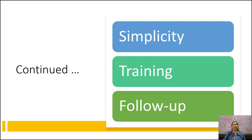Fifth is training. Supervisors and union representatives should be given training in grievance handling. This will help to ensure effective working of the grievance procedure. Follow-up: the working of the grievance procedure should be reviewed at periodical intervals, and necessary improvements should be made to make the procedure more effective.